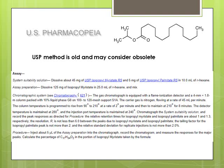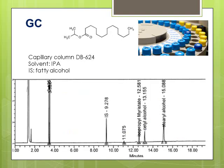In this particular GC method by USP, the method uses a packed column with five mercury injections. People who do GC know that packed columns are not used very often, so I consider this method somewhat old or even obsolete. All current GC methods use capillary columns. I will show you a chromatogram generated by a capillary column — this is a GC chromatogram of a finished product containing isopropyl myristate, and the IPM peak is shown at 12.6 minutes.